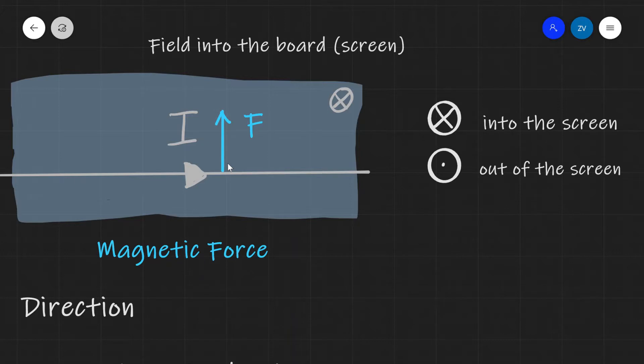We know that the magnitude of that force will be given by F equals BIL—F is equal to your magnetic flux density times the current times L. However, we also know that the direction of the force will be upwards. Well, how do we know the direction of the force?